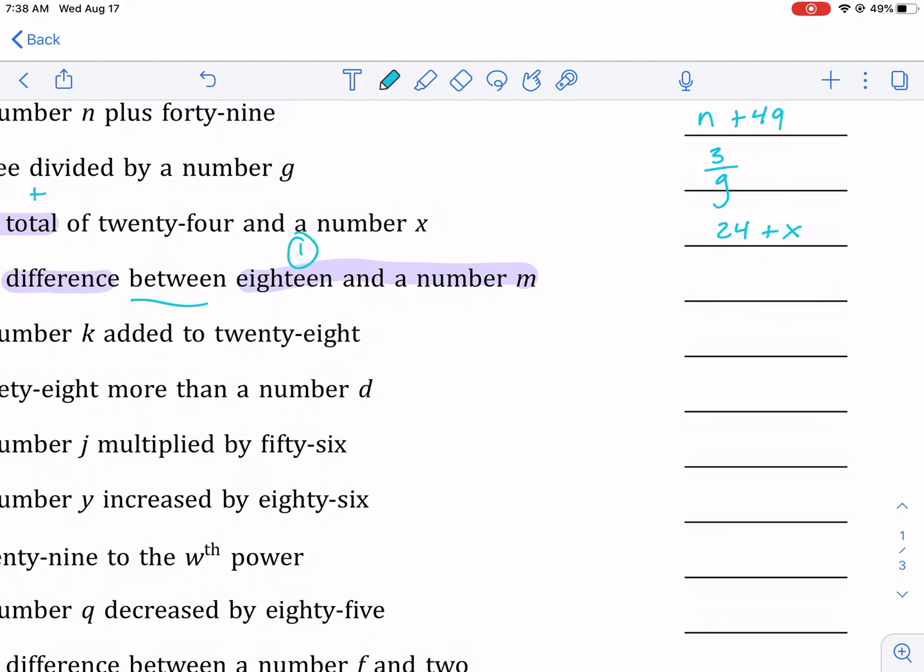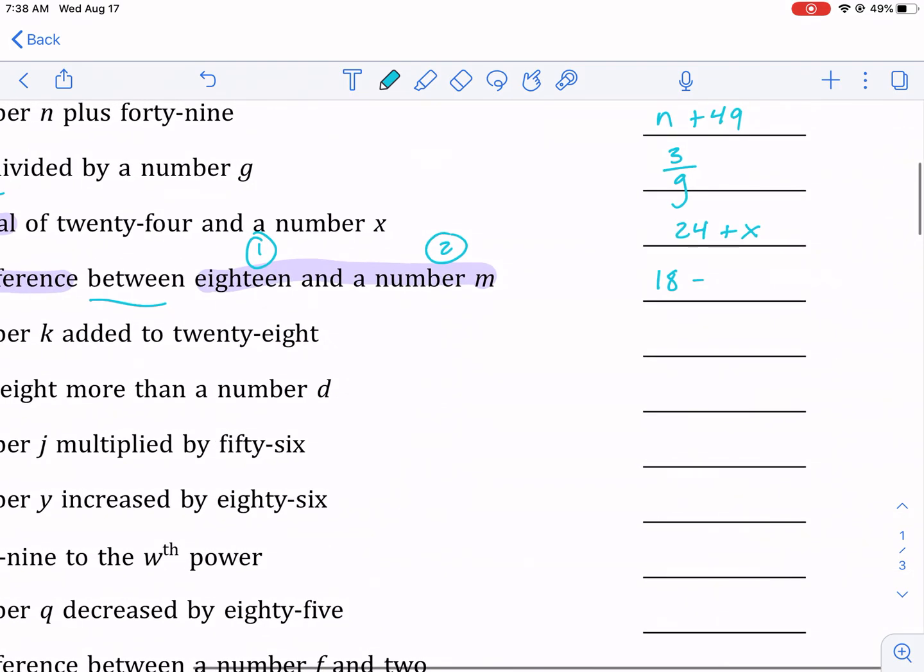The first number or the first term—that one's gonna go first, and then the second one is gonna be subtracted. We're talking about difference between—the 18's first, so that one gets listed first over here, and then a number m, that's second, so that gets listed after the subtraction. Just keep that in mind as you do this: the second one gets subtracted when you're talking about difference.